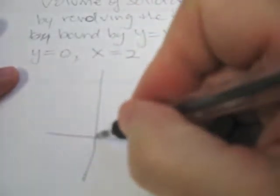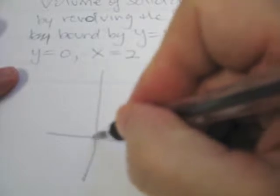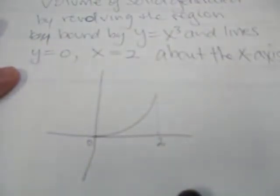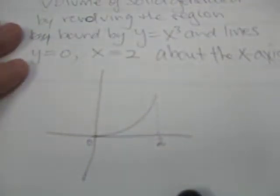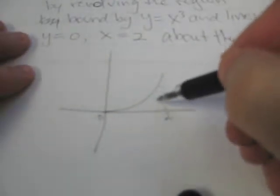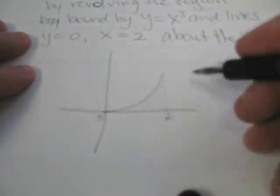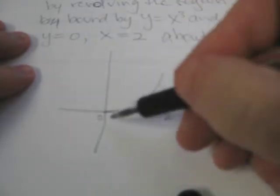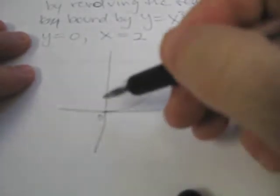The first thing to do is draw a picture of this to get a sense of what's happening. We know that the cubic function does this, and if we go from 0 to 2, we have this situation. Now we're taking that area bound by the x-axis, x equals 2, and of course y equals 0 is the x-axis.